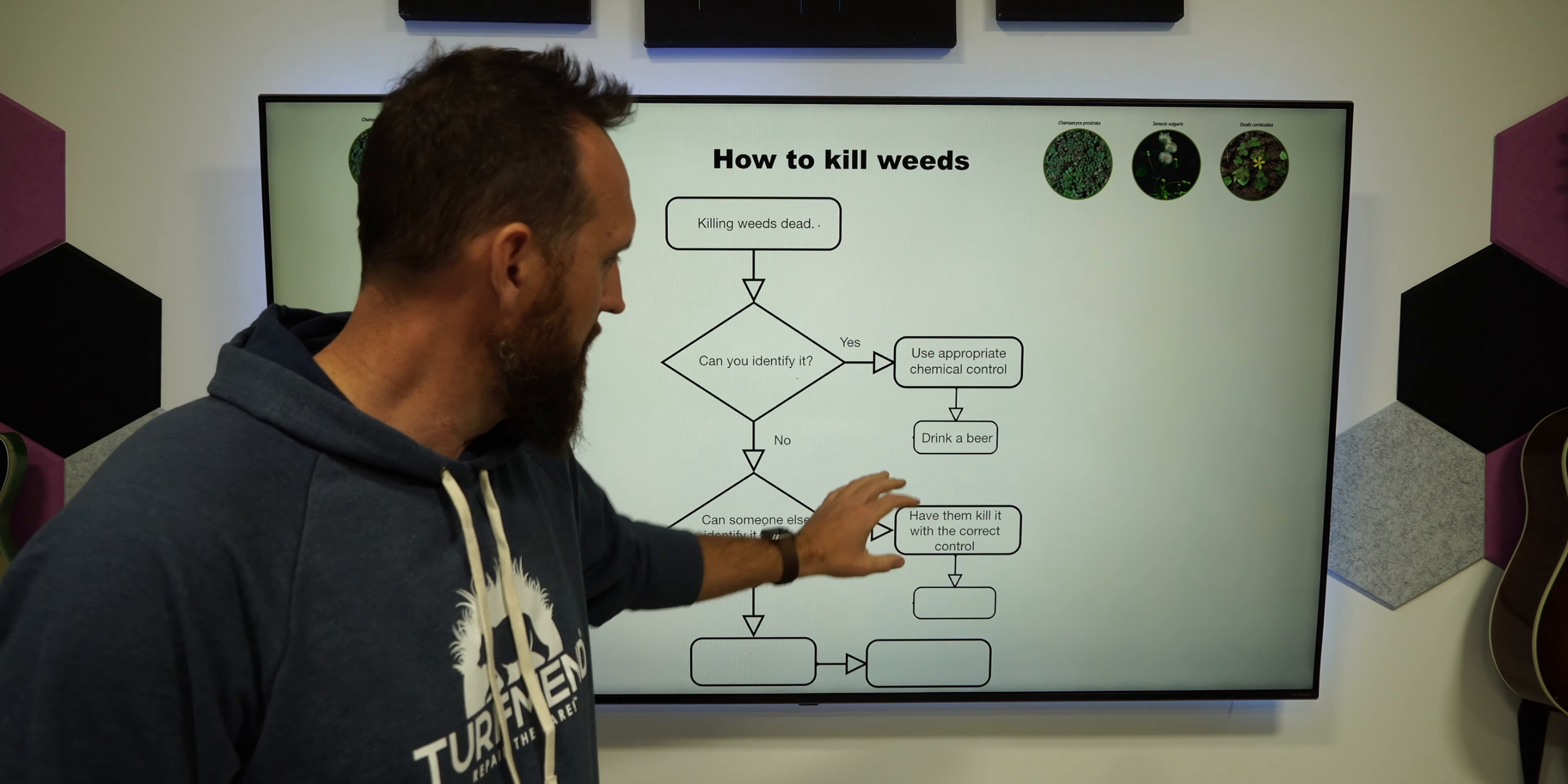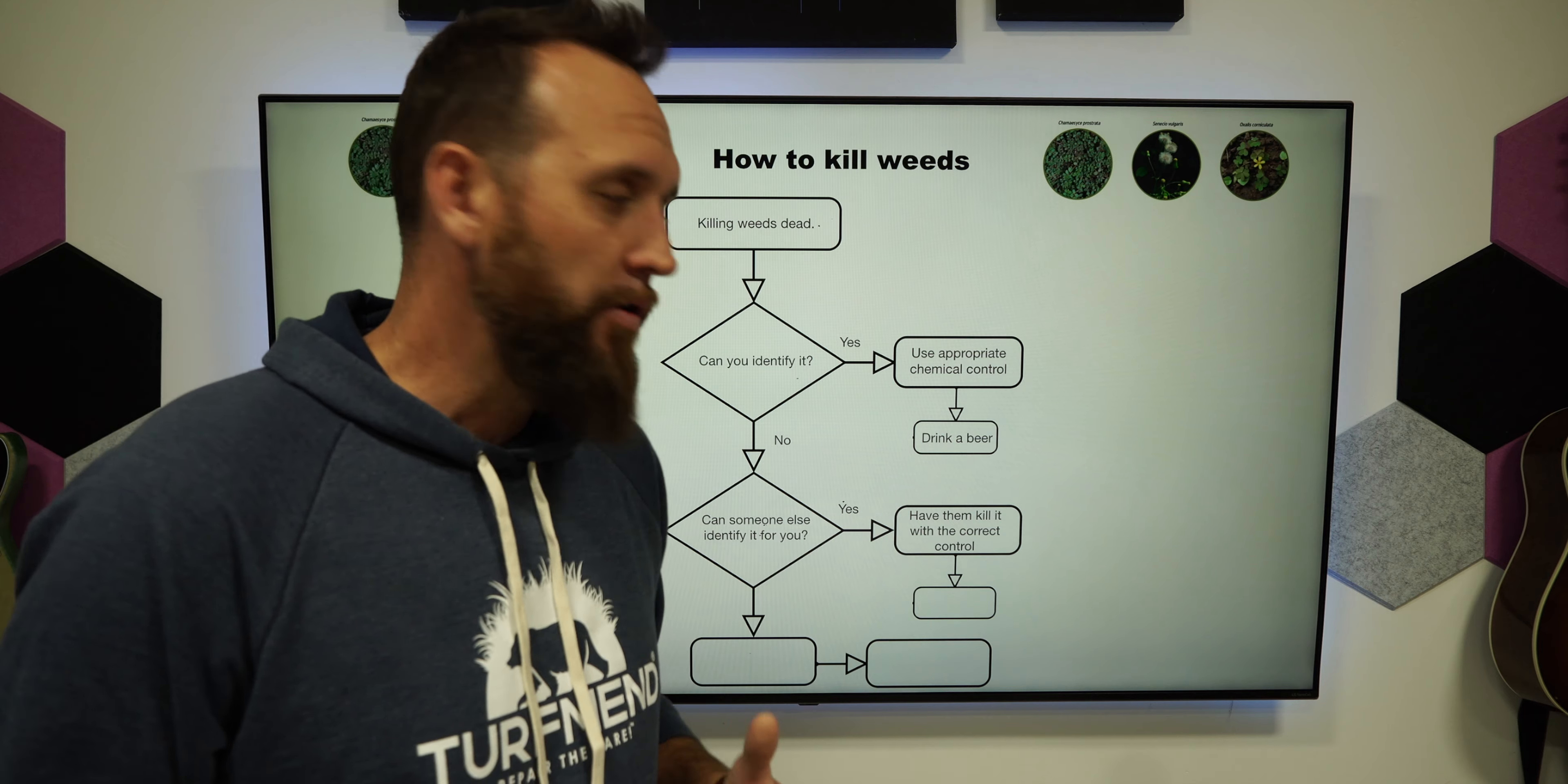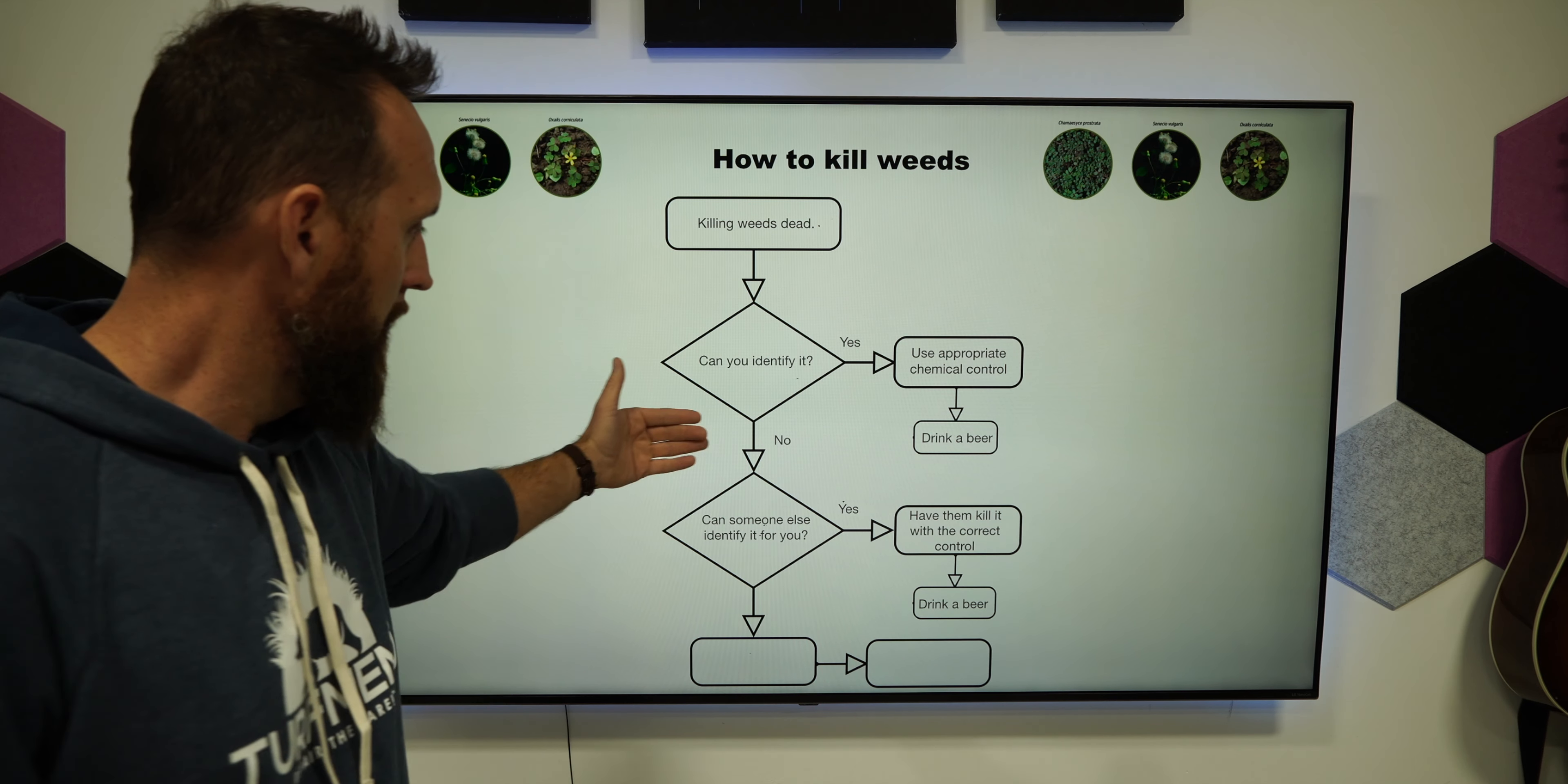Okay, so yes, you ask the person. Great, have them kill it, because if they know what it is, likely they're going to have more confidence in the controls. They can kill the weed with the correct control product at the correct rate, and you can sit there and drink a beer while they do it and learn something. Have them teach you something—it's a great teaching moment.